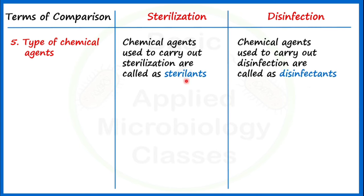But if we increase the exposure time and lengthen the duration of treatment, then the same chemical — glutaraldehyde — will act as a sterilant. Another example is a sterilizing gas like ethylene oxide, which is one of the very well-known chemical sterilants.